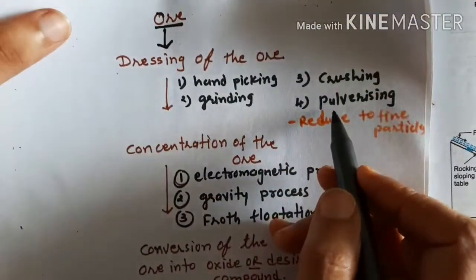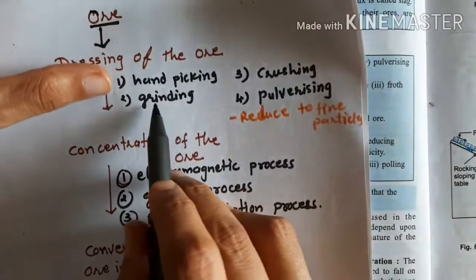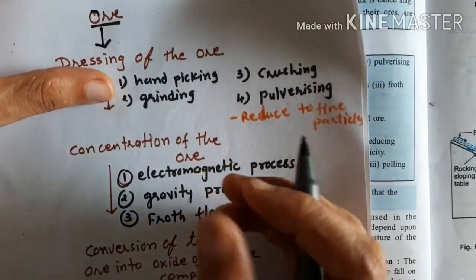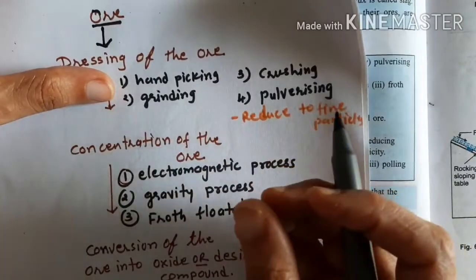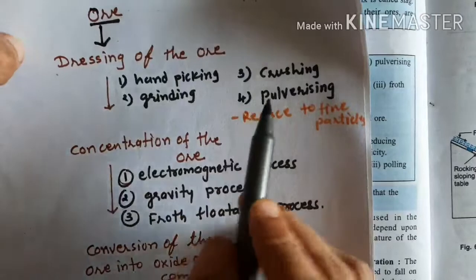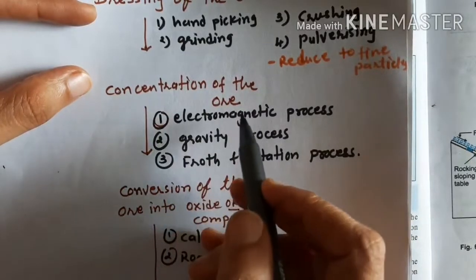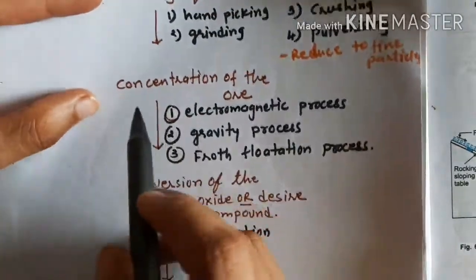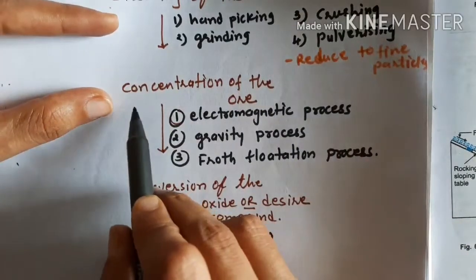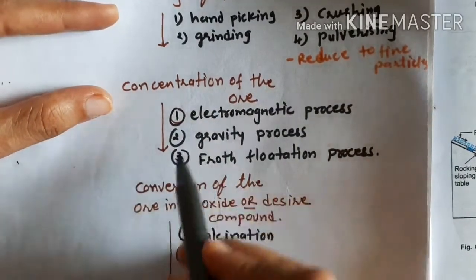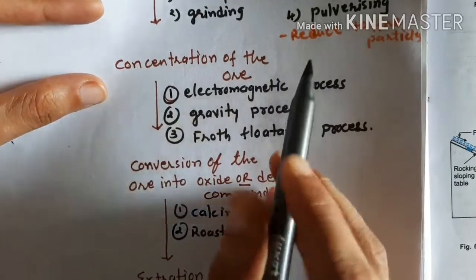After dressing, we do the concentration of the ore. First we take the powdered form of the ore and concentrate it. There are three ways to concentrate. The first is the electromagnetic process. In this method, the pulverized ore is passed through a belt that has a magnetic field. Non-magnetic particles are separated here, and magnetic particles are attracted toward the magnetic wheel.